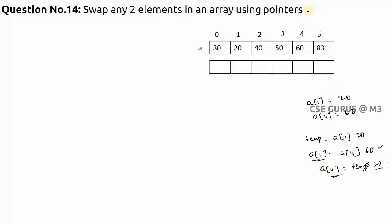The question asks how to do this using pointers. You can create a pointer variable, or even without one, because in C, arrays are one type of pointer. If I say a[0] I get 30, and if I say &a[0] I get the address of a[0]. Let's say the base address is 2000.